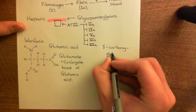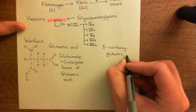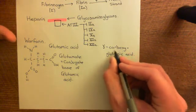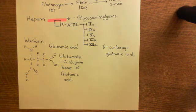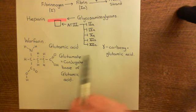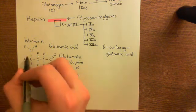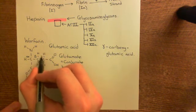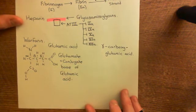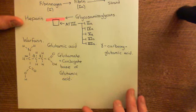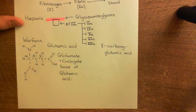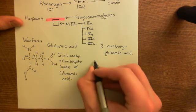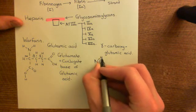Gamma-carboxyglutamic acid is what we need. We're going to stick a carboxylic acid group onto the R group of glutamate. To understand what 'gamma' means, we need to name the carbons: the alpha carbon of the amino acid, then the beta carbon, and finally the gamma carbon. To create gamma-carboxyglutamate, you simply stick another carboxylic acid group off this gamma carbon.